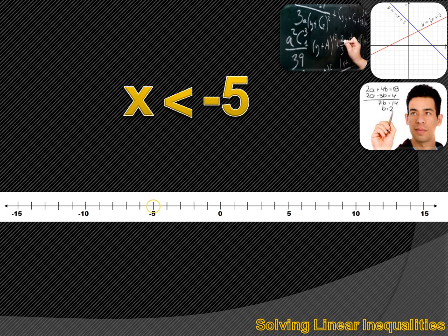We draw a circle around the minus 5, and we're careful not to fill in that circle. If we filled in the circle, we'd have included the actual number minus 5. We don't want to include minus 5, so we just circle it. Then we want numbers that are less than minus 5, so we draw an arrow to the left towards the smaller numbers.